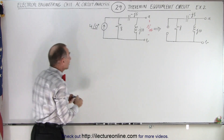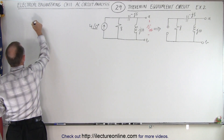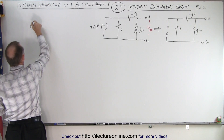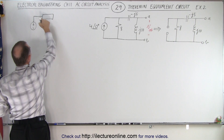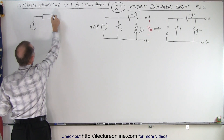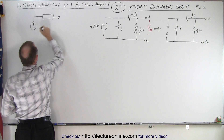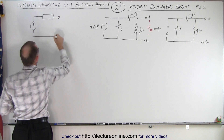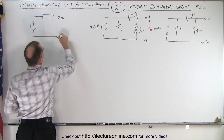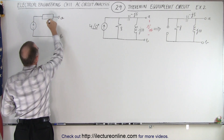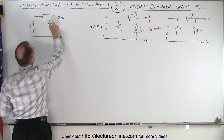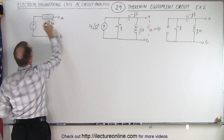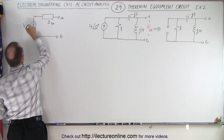When we draw the Thévenin equivalent circuit, it will look like this. We have a voltage supply, we have an impedance in series, and then we have terminals A and B. So we need to find the Thévenin impedance, and then we need to find the Thévenin voltage.